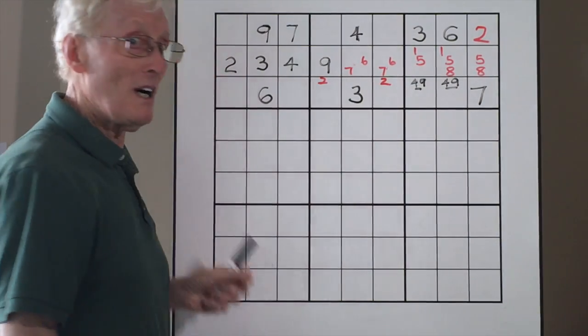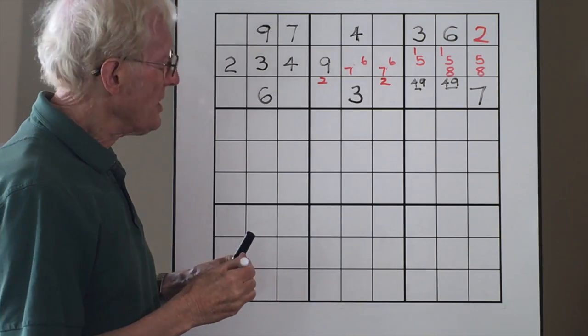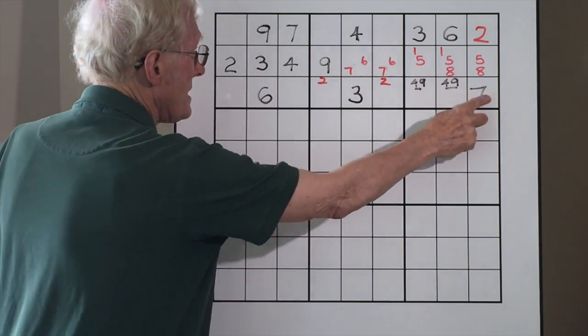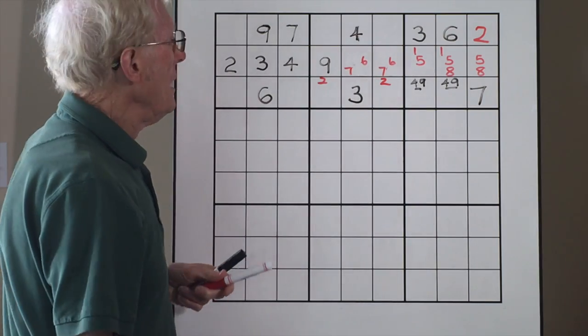And you're left with, guess what? A six, seven matching pair. Now, if you'd have noticed these six, seven here and the six, seven there before you started, you would have saved all that trouble.